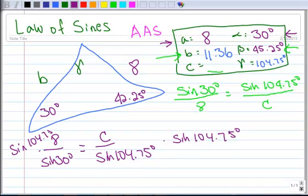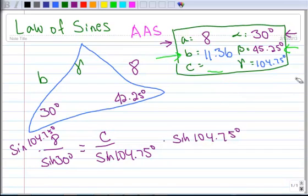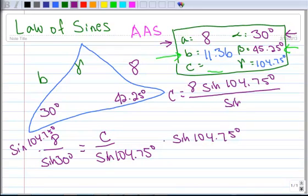104.75 degrees. So C is going to be, I like to show the whole thing on paper before I start typing it in. So C is going to be 8 times the sine of 104.75 degrees divided by the sine of 30 degrees. And when you do that in your calculator, you get 15.47.